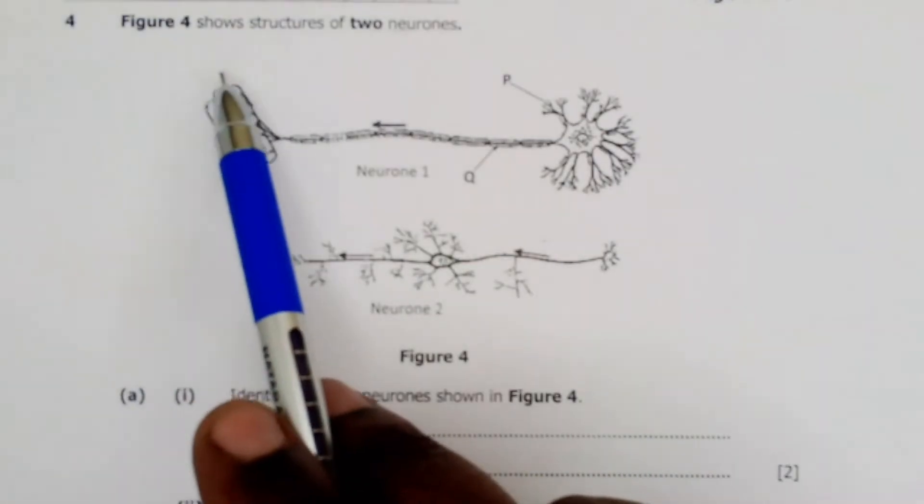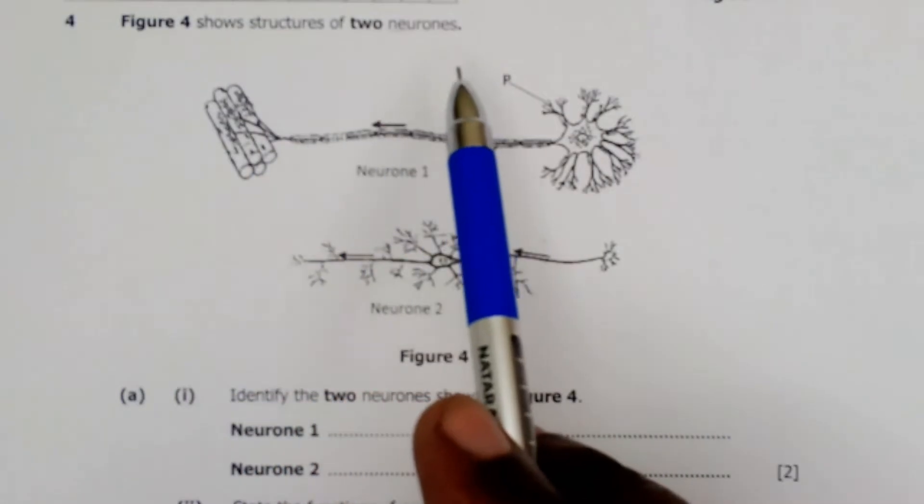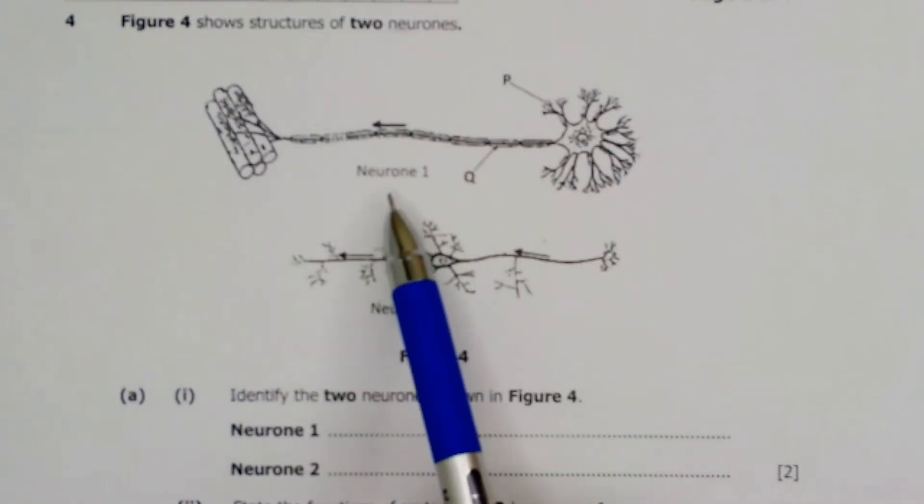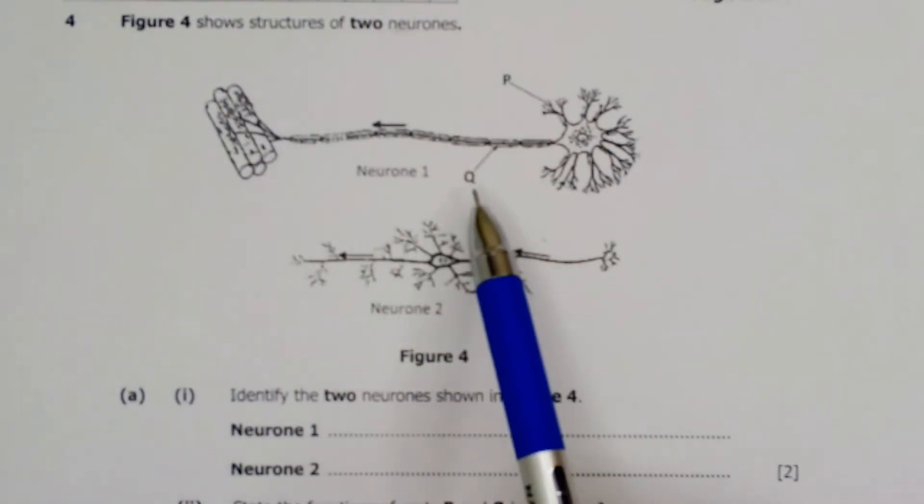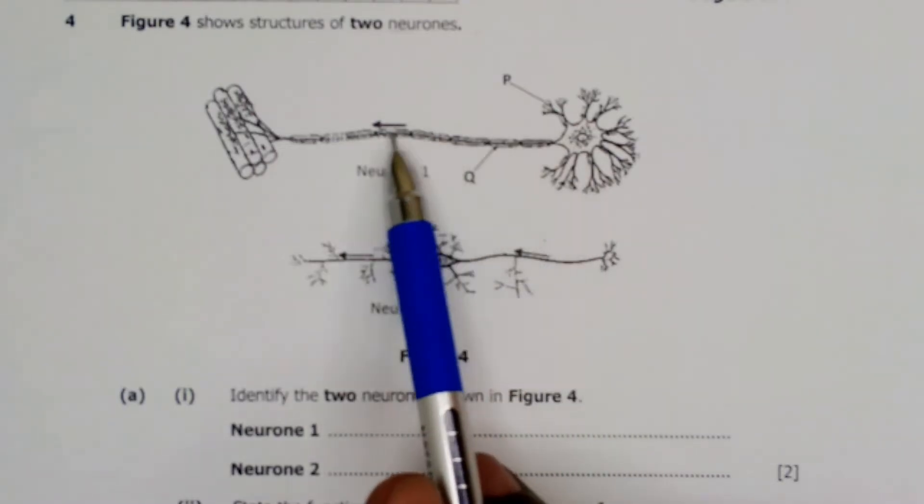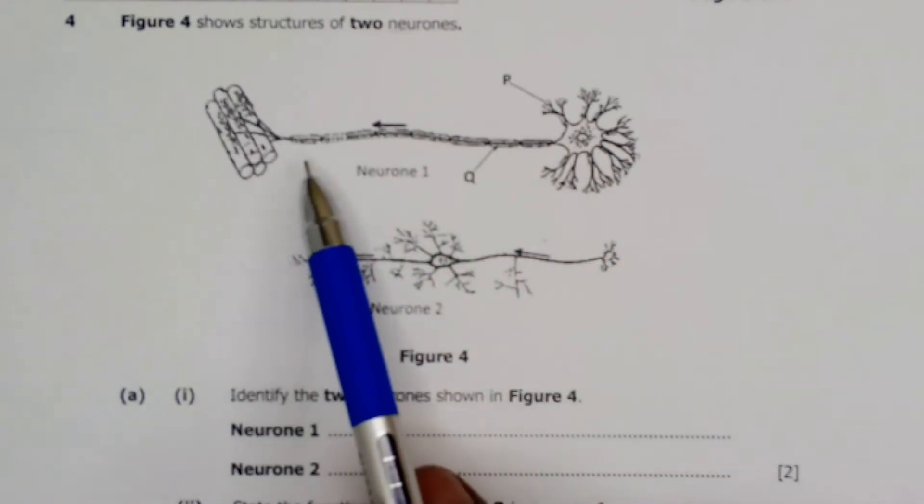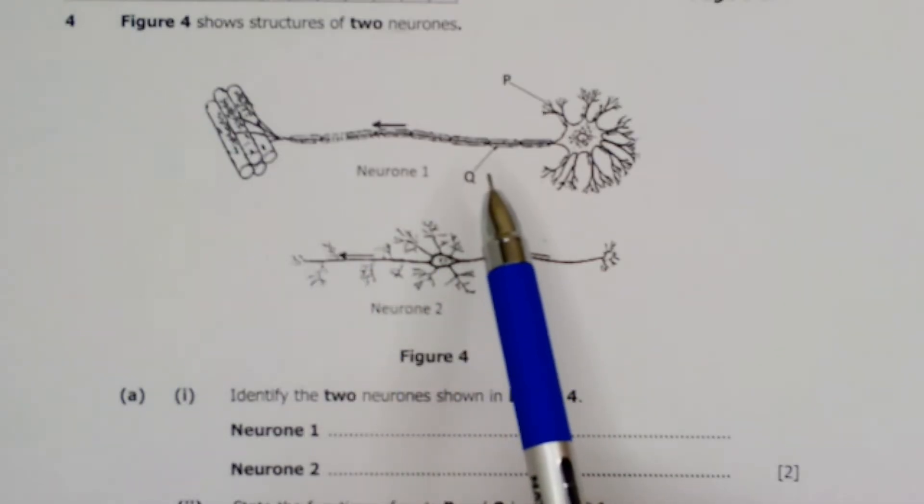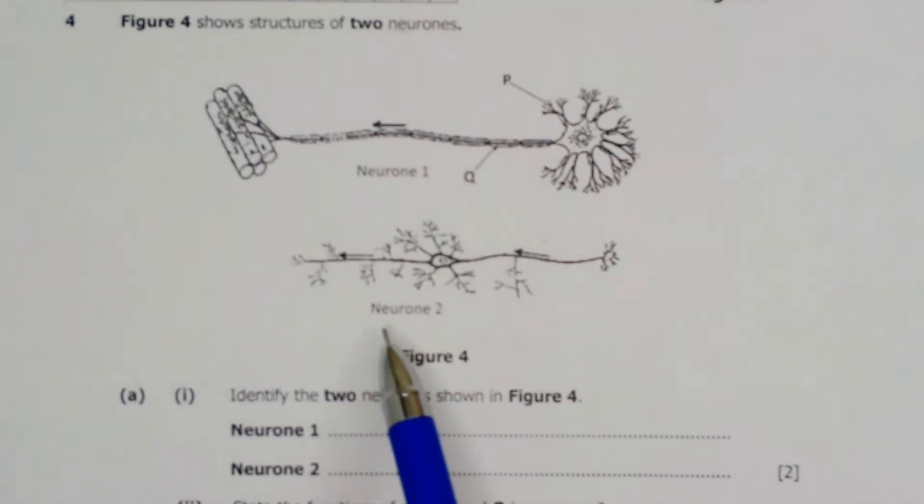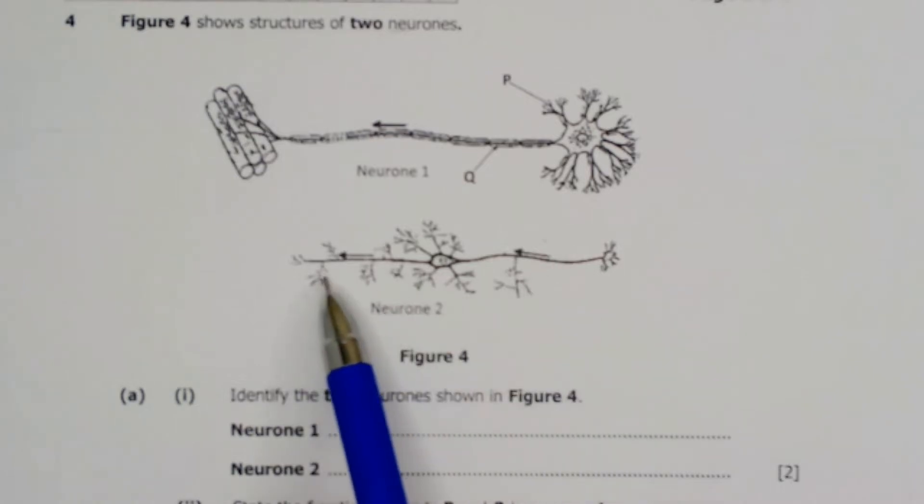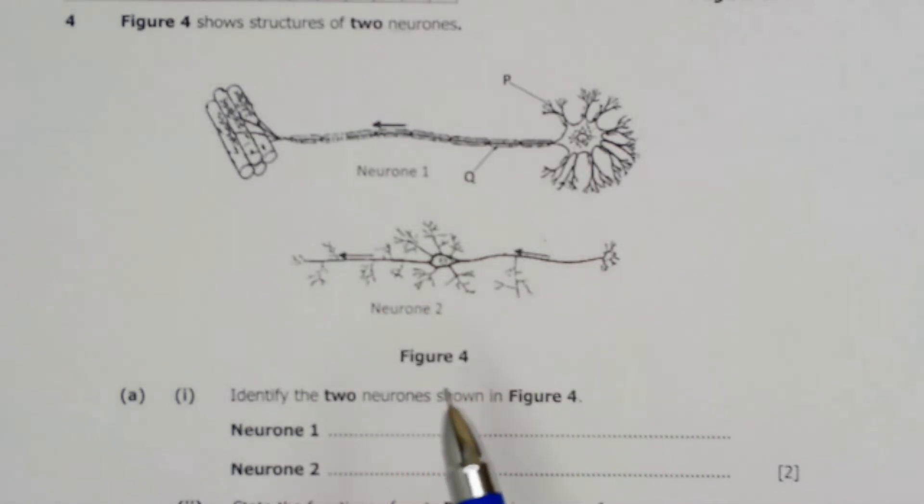Question four, figure four shows structures of two neurons. We have neuron one which is labeled P and Q. Then we have an arrow which is showing the movement of the electrical impulse. Then we have neuron two which is not labeled but it's showing the movement of the electrical impulse. So the questions which were asked on question four.